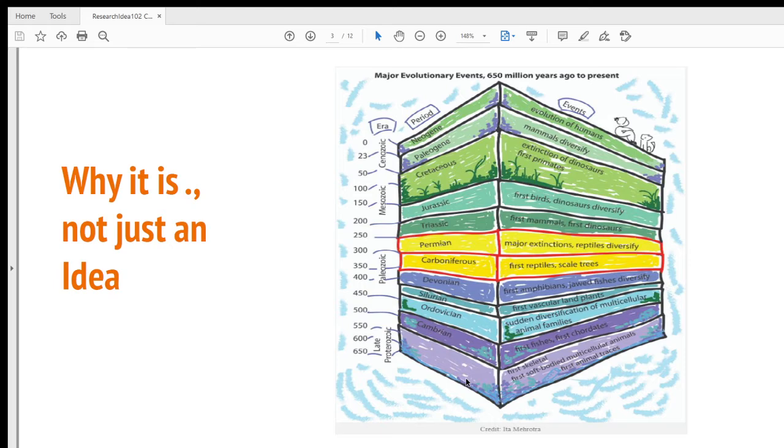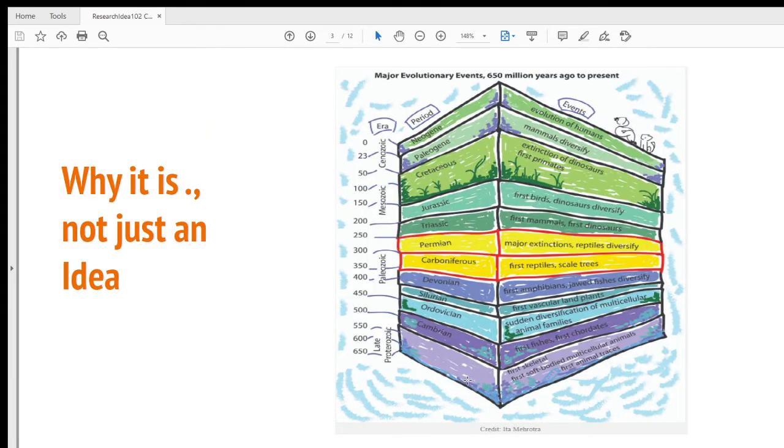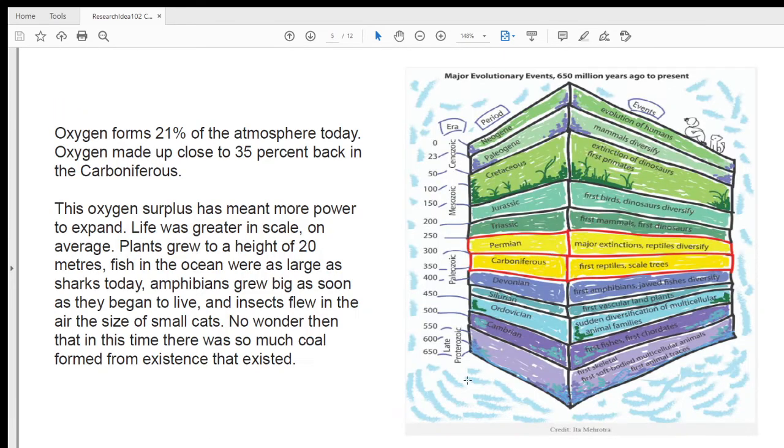And this era is basically characterized by a large percentage, extraordinary percentage, of oxygen in the atmosphere. In those areas, in this time the earth had 35 percent oxygen. Today it is about 20 to 21 percent. And there was a surplus of oxygen.